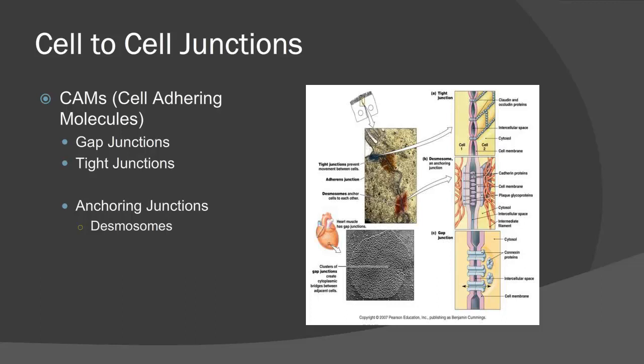Cells are not independently floating around in buckets of liquid. There's a level of structure and organization that allows them to function together as a whole unit. In order for these cells to function as a whole unit, they need to be able to communicate with one another, and the way they do that is through cellular junctions. These junctions depend on their function, which will ultimately determine what they are responsible for — whether it be communication or simply holding cells together so they don't float away from one another.